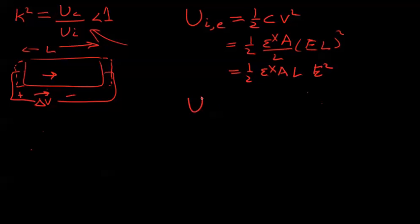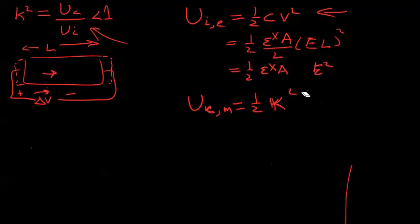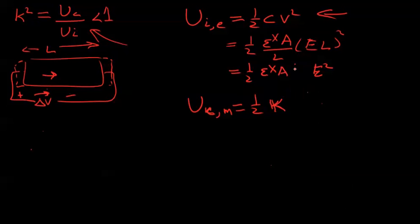And similarly, we can calculate the mechanical energy. So we call it the converted energy mechanical is equal to one half K. This is not the other K. This is the spring constant K. I'm just doing all of these in very simple terms, so you can easily understand my approach.